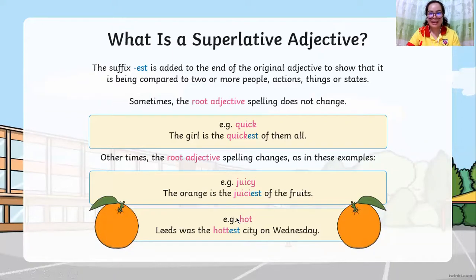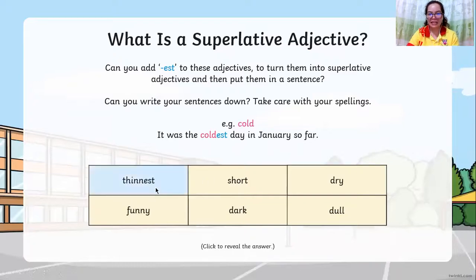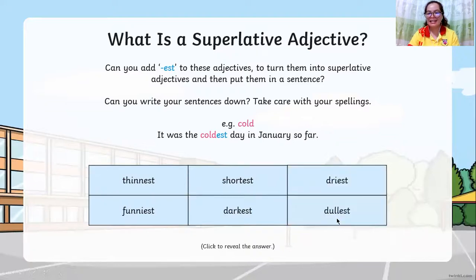If it is a three-letter CVC word (consonant-vowel-consonant), double the last letter of the word and then add the suffix -est. Practice examples: thin→thinnest, funny→funniest, short→shortest, dark→darkest, dry→driest, dull→dullest.